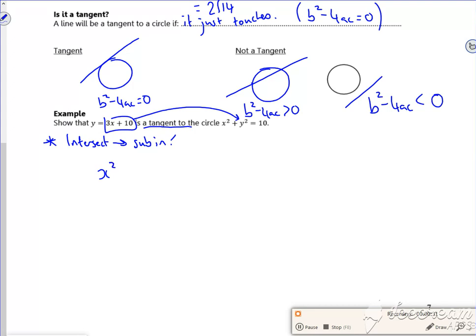So I've got x squared plus 3x plus 10 squared is 10. So let's expand, let's rearrange, let's simplify, let's see what we've got then. So 9x squared, 60x plus 100 is 10.